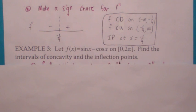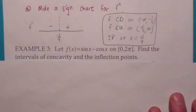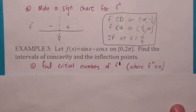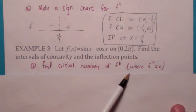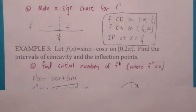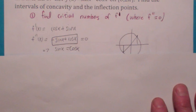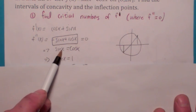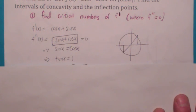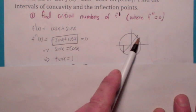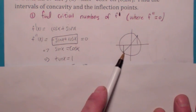Now suppose we have the trig function f(x) = sin x − cos x on the interval from 0 to 2π. Find the intervals of concavity and inflection points. It's exactly the same process as finding local max and min, except instead of finding where F prime is 0, we find where F double prime is 0. Take the derivative, then take the derivative again, and set it equal to 0. That means sin x = cos x, so dividing both sides by cos x gives tan x = 1. Between 0 and 2π, tan x = 1 at x = π/4 and x = 5π/4.